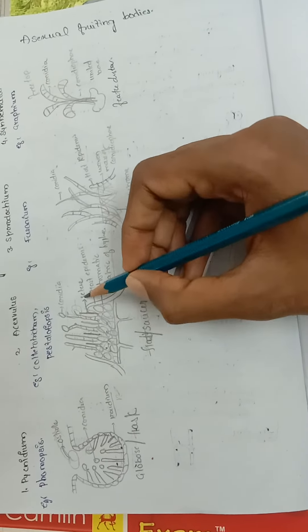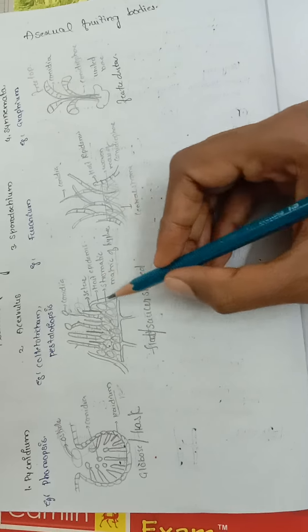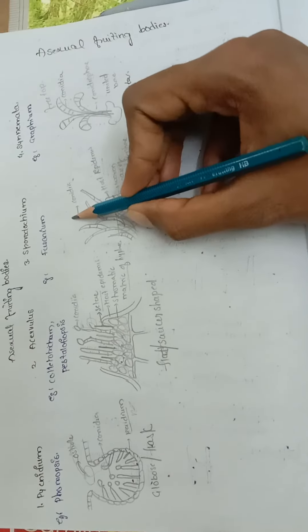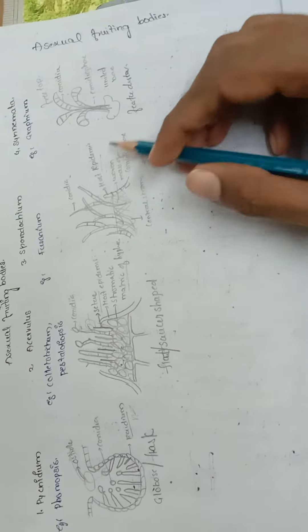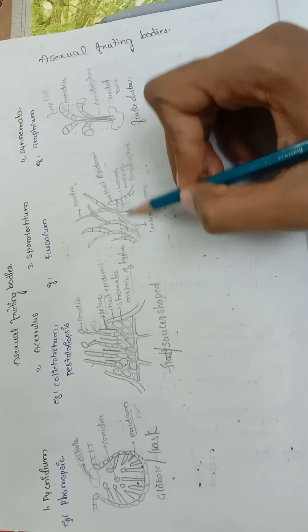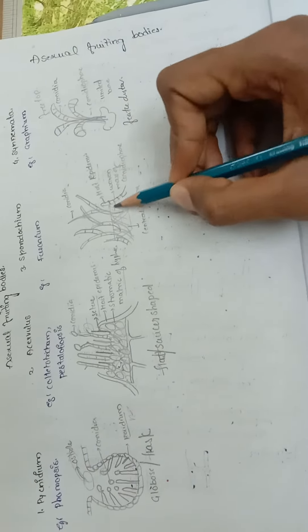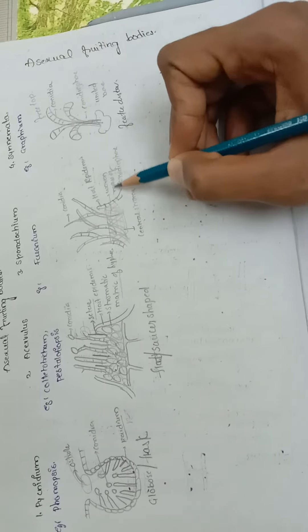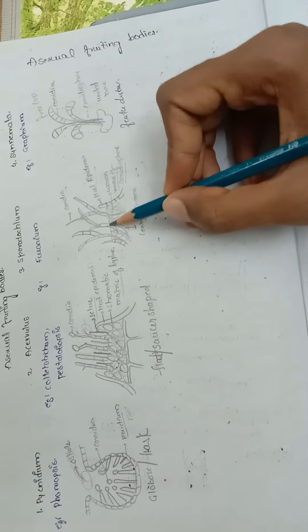Next, sporodochium. Sporodochium has a central stroma which is the woven tissue or woven mass tissue of conidiophores, and these conidiophores produce the conidia.